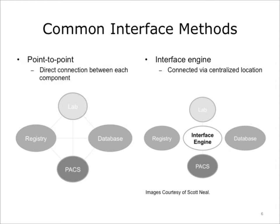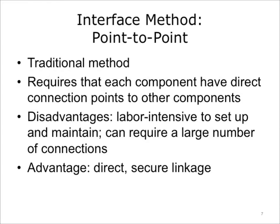There are two widely used methods for connecting dissimilar systems in EHR systems: point-to-point, in which there is a direct connection between each component, and an interface engine, in which components are connected via a centralized location. As the image on the left demonstrates, point-to-point integration means ensuring that each separate component can reliably and directly communicate with each other component in the system. Point-to-point interfacing is the traditional method for integrating healthcare applications, requiring that each software component establish a separate and distinct connection to each other component it needs to communicate with. Sometimes, significant coding is required.